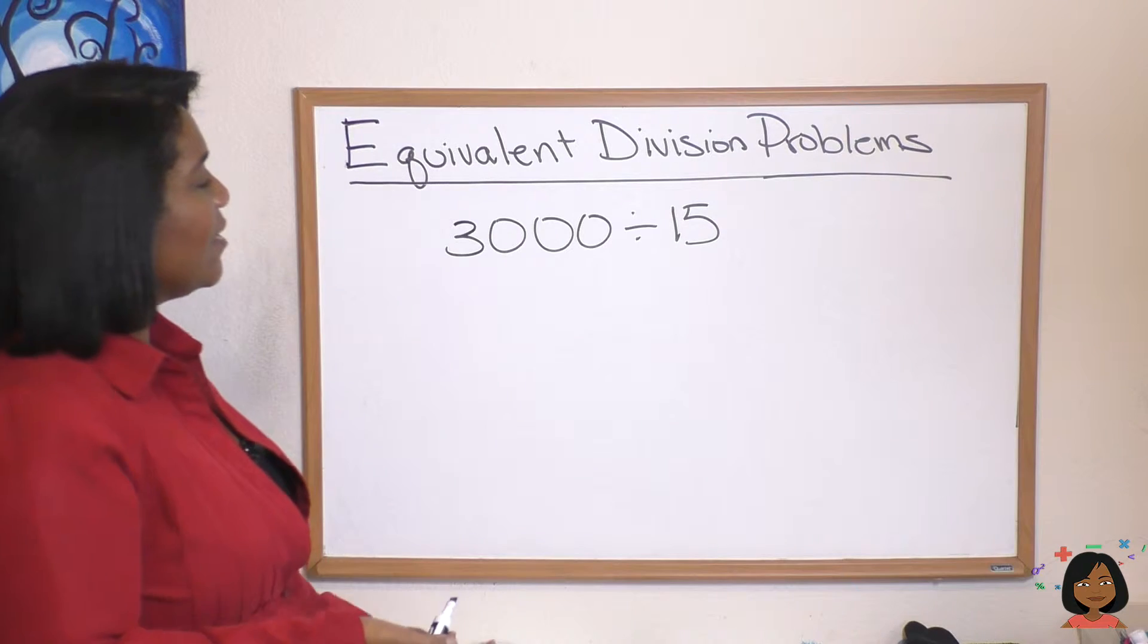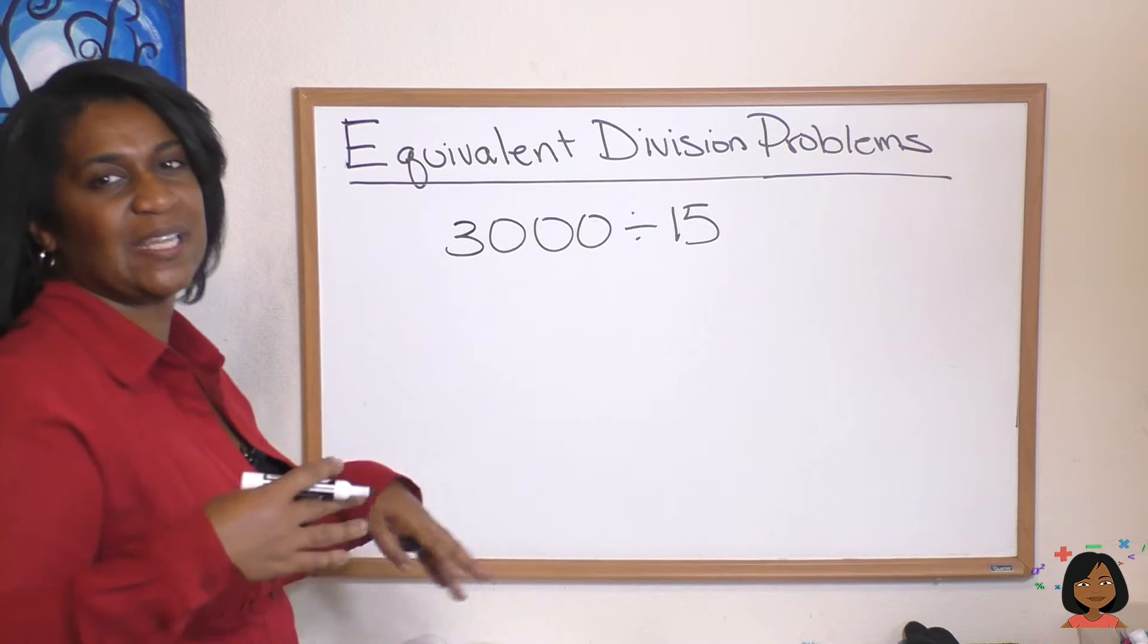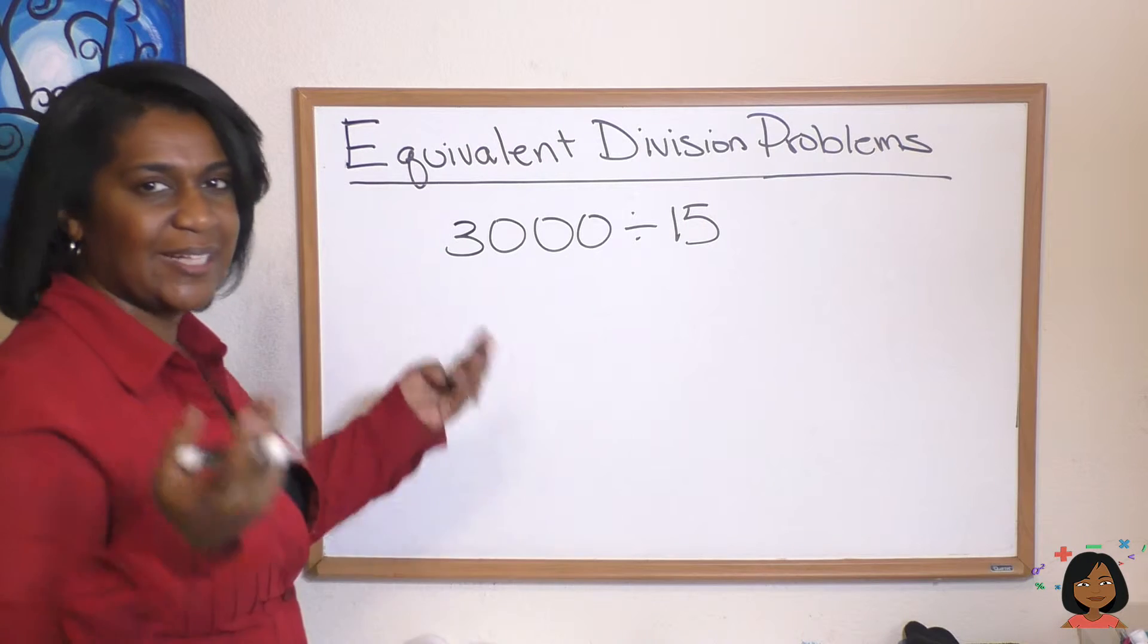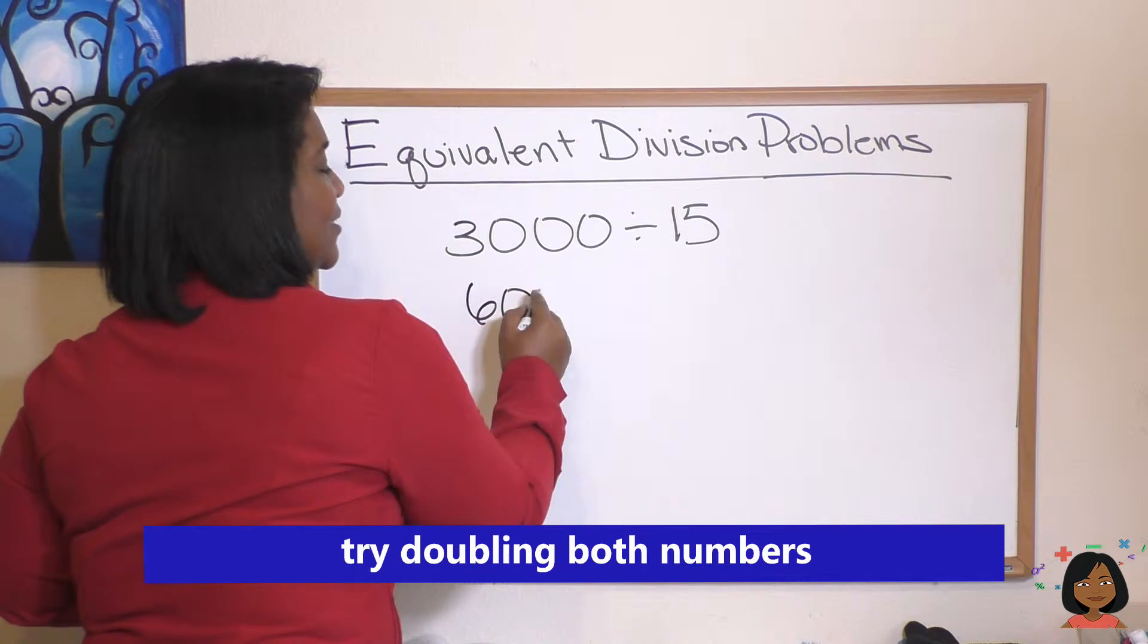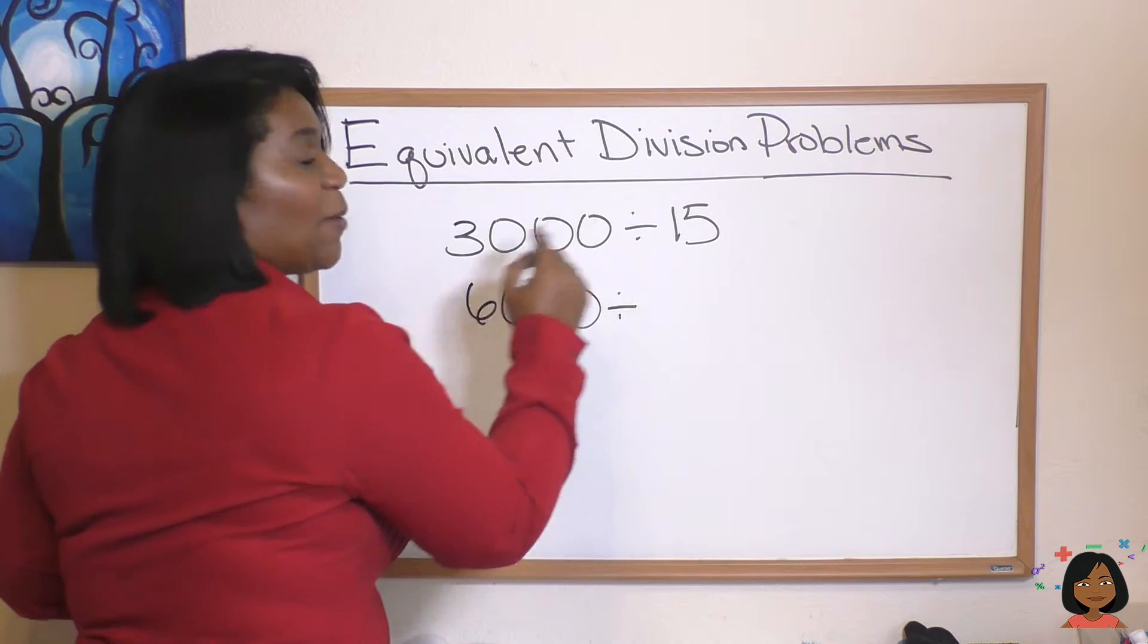Or can I think, is there a way that I can get this 15 to be a nicer number to divide into? Let's double everything and see what happens. If I double 3,000, I get 6,000. If I double 15, I get 30.